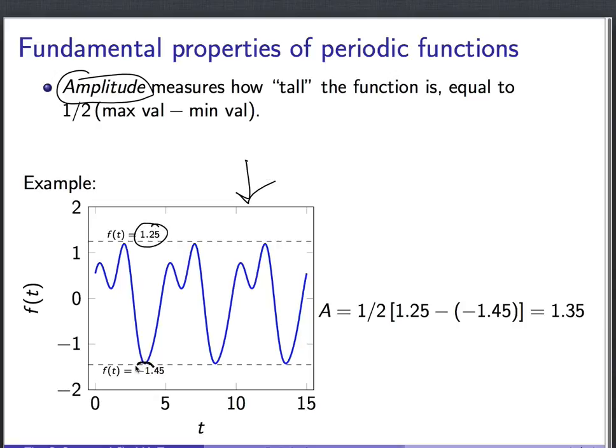Its maximum value is at 1.25, its minimum value is down here at about minus 1.45. And so we take half the difference of those two things and we find an amplitude of about 1.35, estimating from the graph.